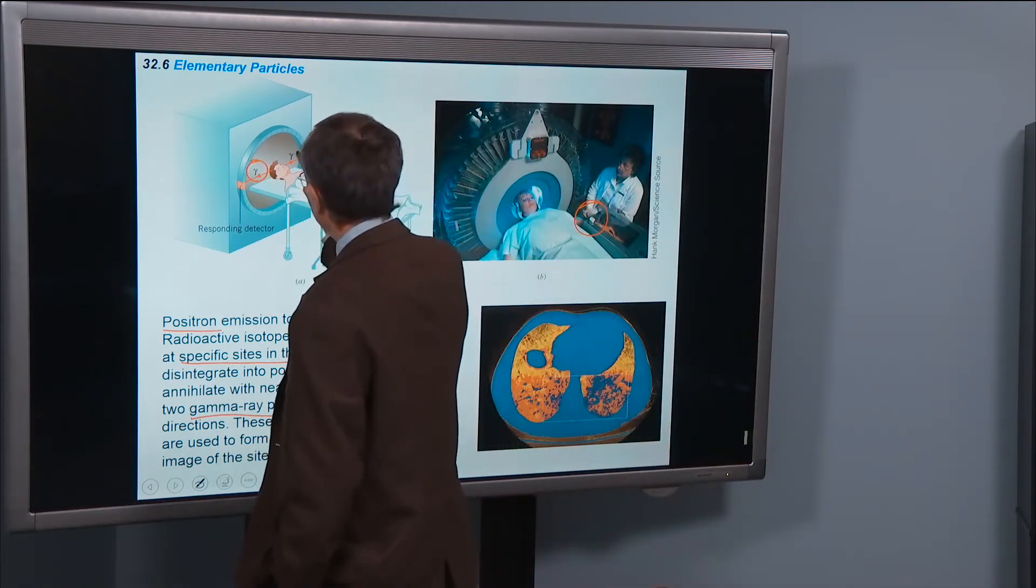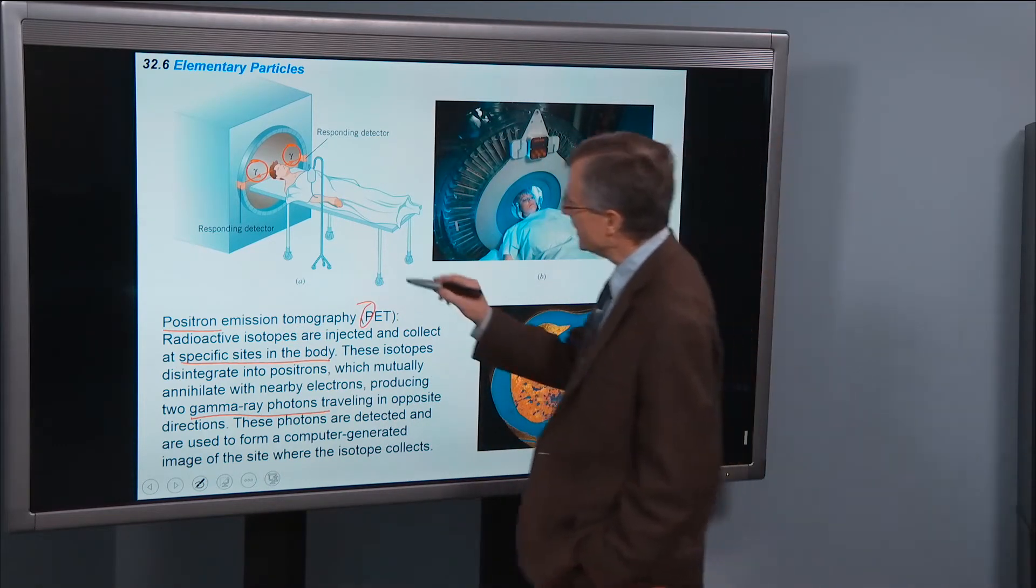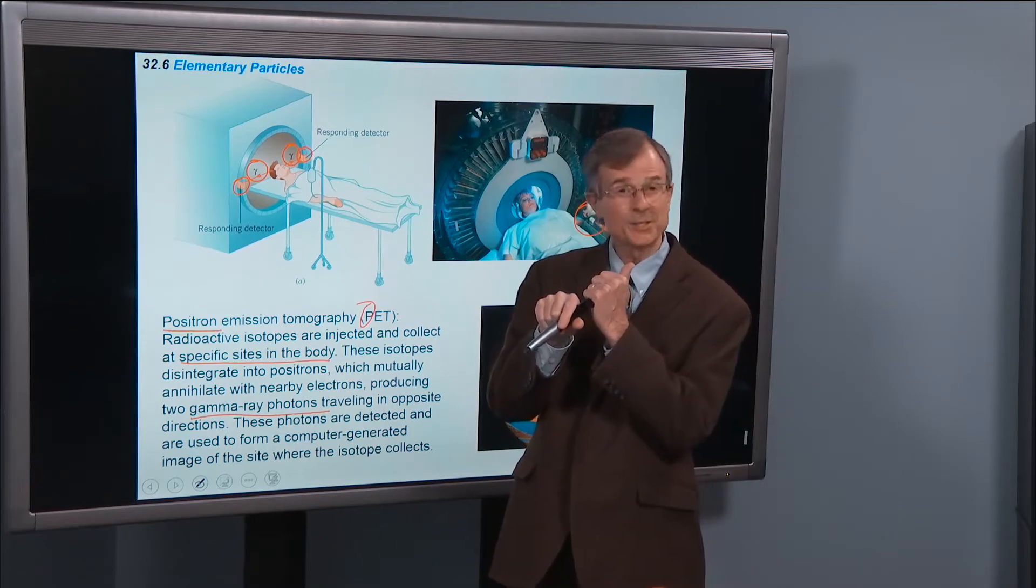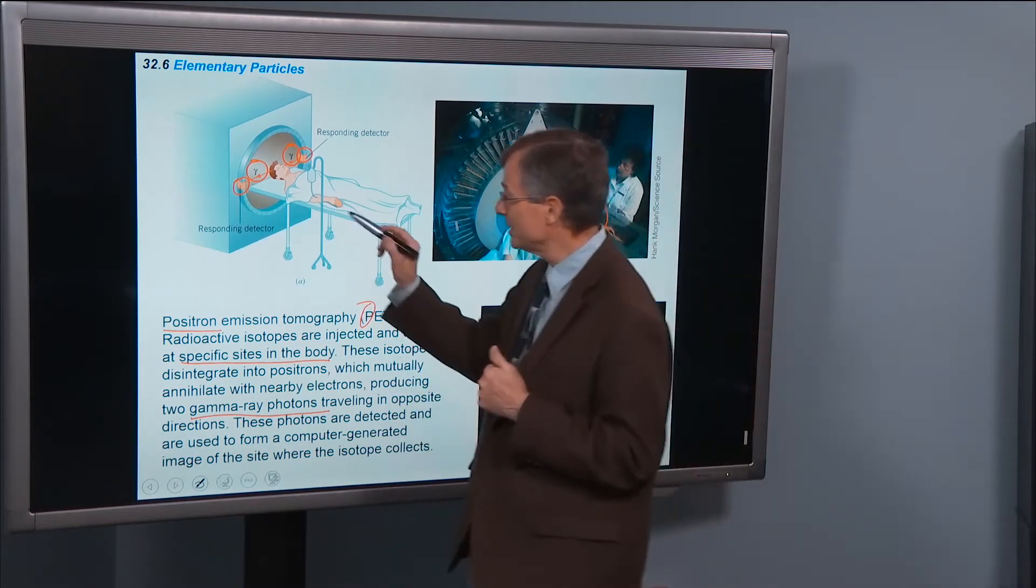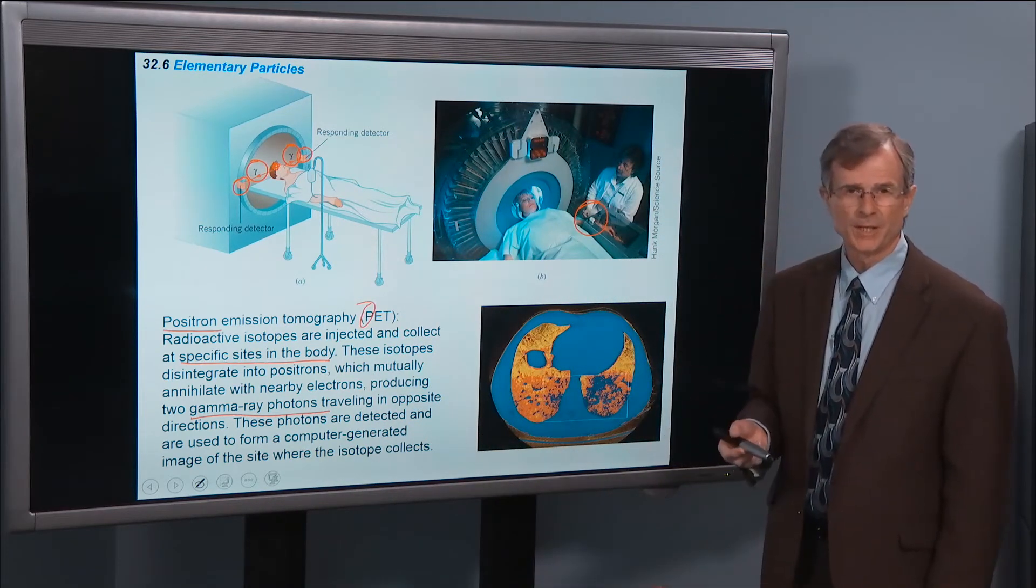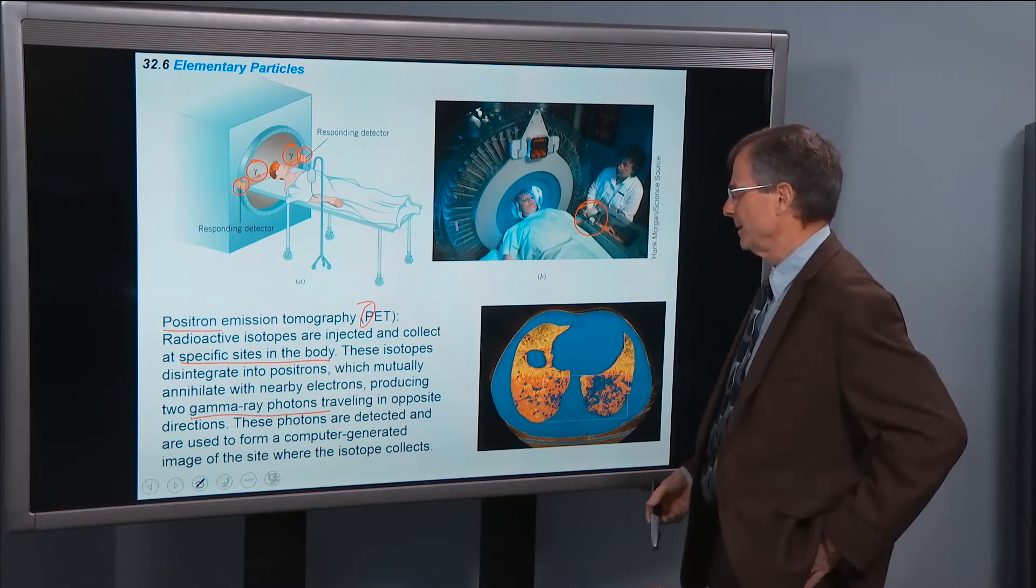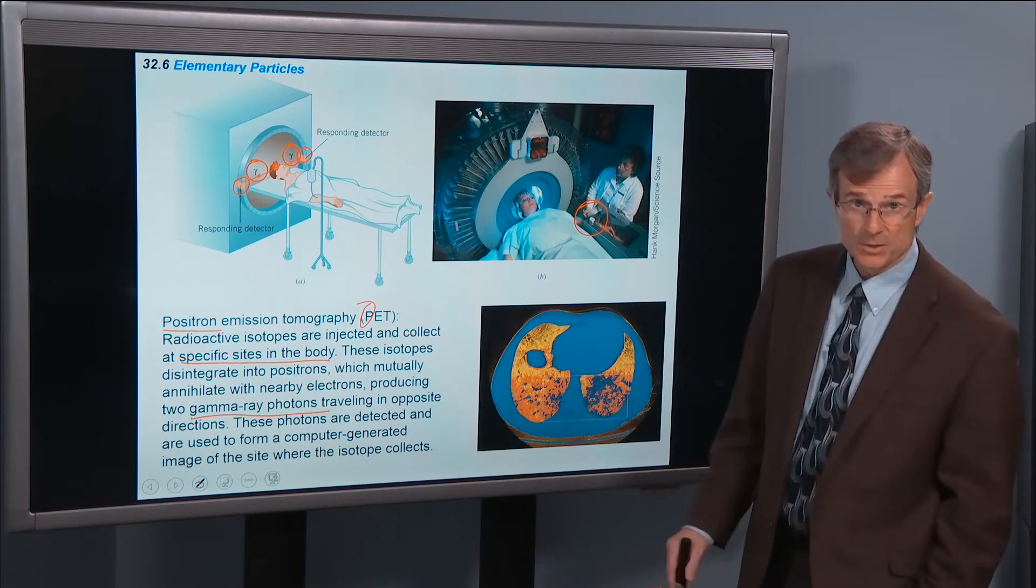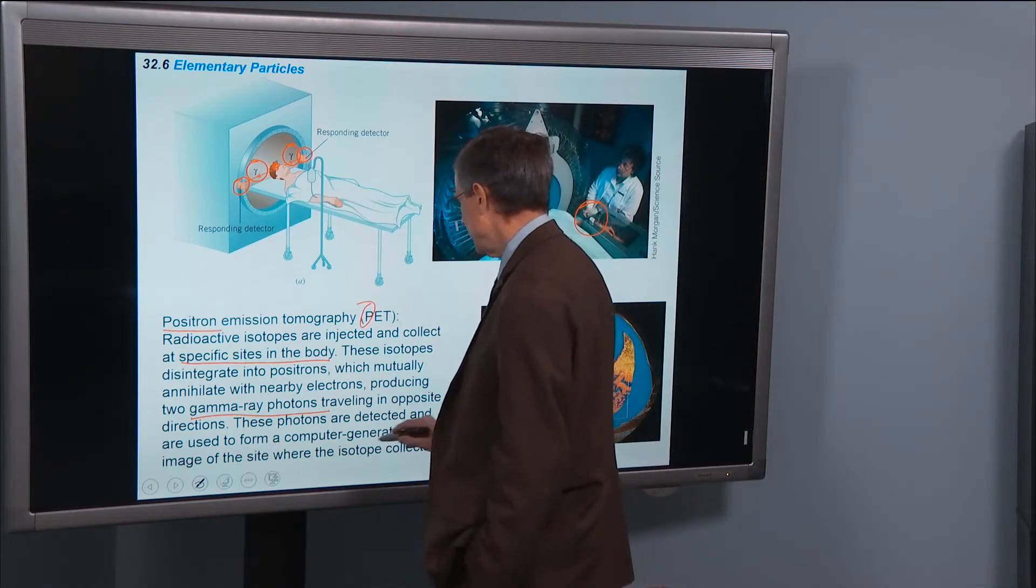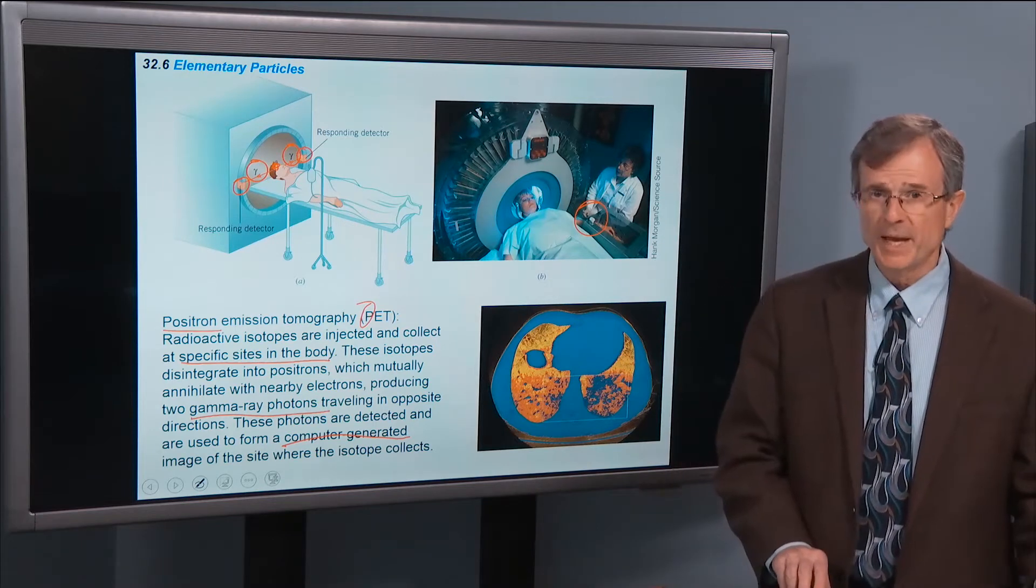That produces gamma ray photons that travel in opposite directions. So you've got detectors on the two sides of those oppositely directed gamma ray photons. So you can tell where that reaction occurred. And you put it all together to get a computer-generated image of the site where the isotope collects.